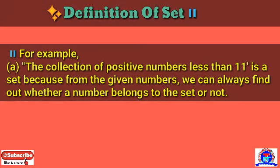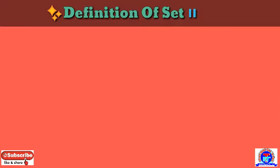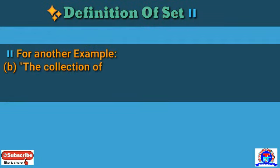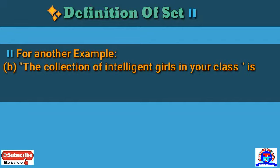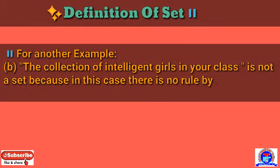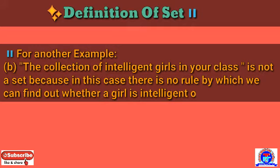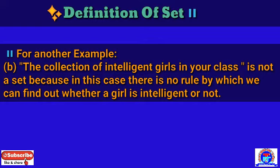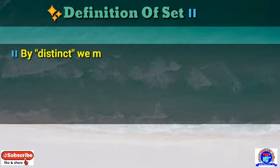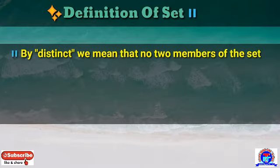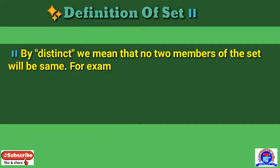The collection of positive numbers less than 11 is a valid set because from the given numbers we can always find out whether a number belongs to the set or not. Another example: the collection of intelligent girls in your school is not a set, because in this case there is no rule by which we can find out whether a girl is intelligent or not.